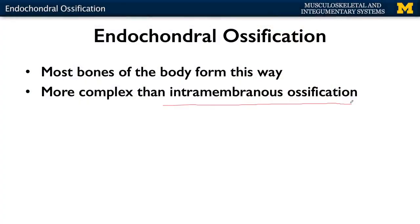Previously we discussed intramembranous ossification. Now we're going to talk about endochondral ossification, which will occur through three main steps. You're going to have the mesenchymal skeleton that all bones form through — even with intramembranous ossification you still have that mesenchymal skeleton, or that embryonic connective tissue.